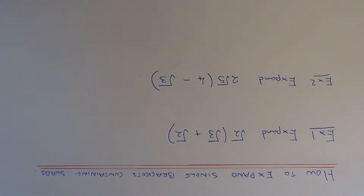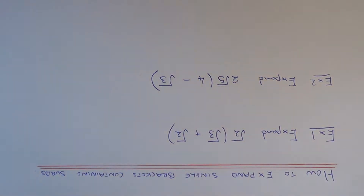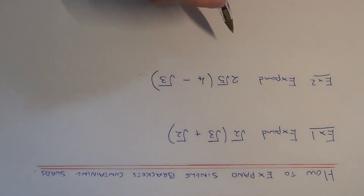Today I'm going to show you a couple of examples on how to multiply out single brackets which contain surds. Before you attempt this, make sure you're confident with multiplying two surds together. So let's have a look at example one.